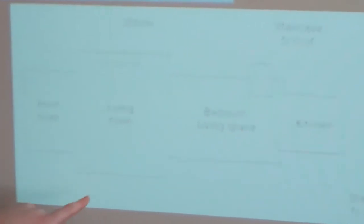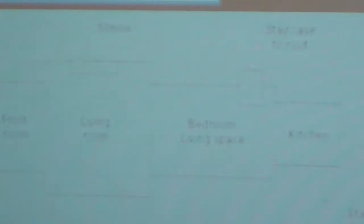This is the floor plan of an ancient Egyptian house. They have a front room, living room, bedroom and living space, and a kitchen, a shrine, staircase to roof, and a staircase down to the cellar.